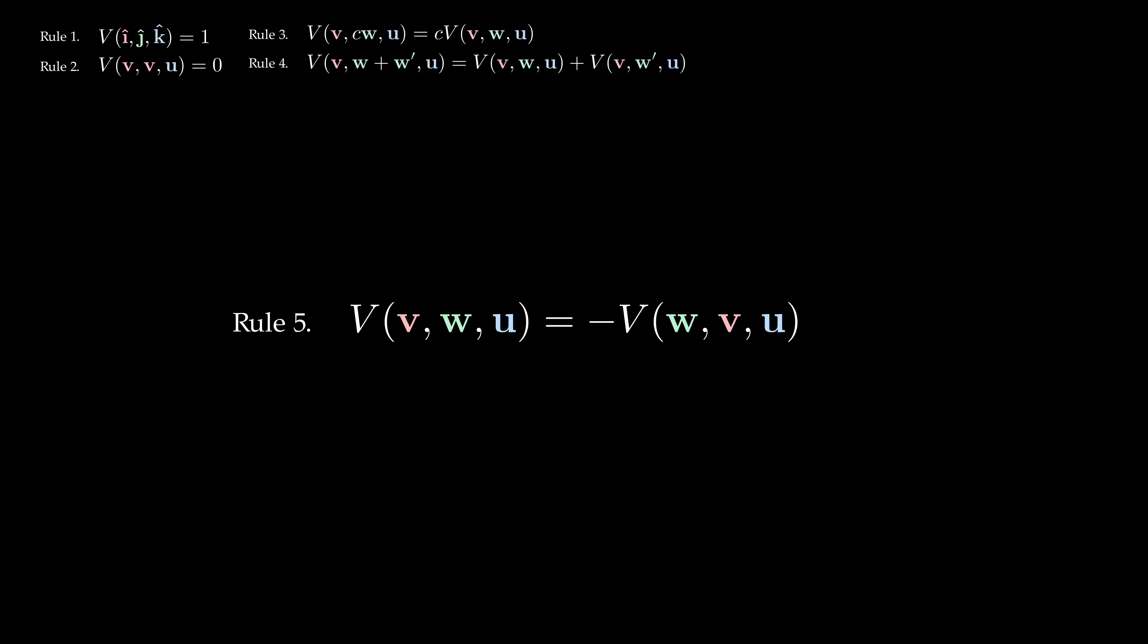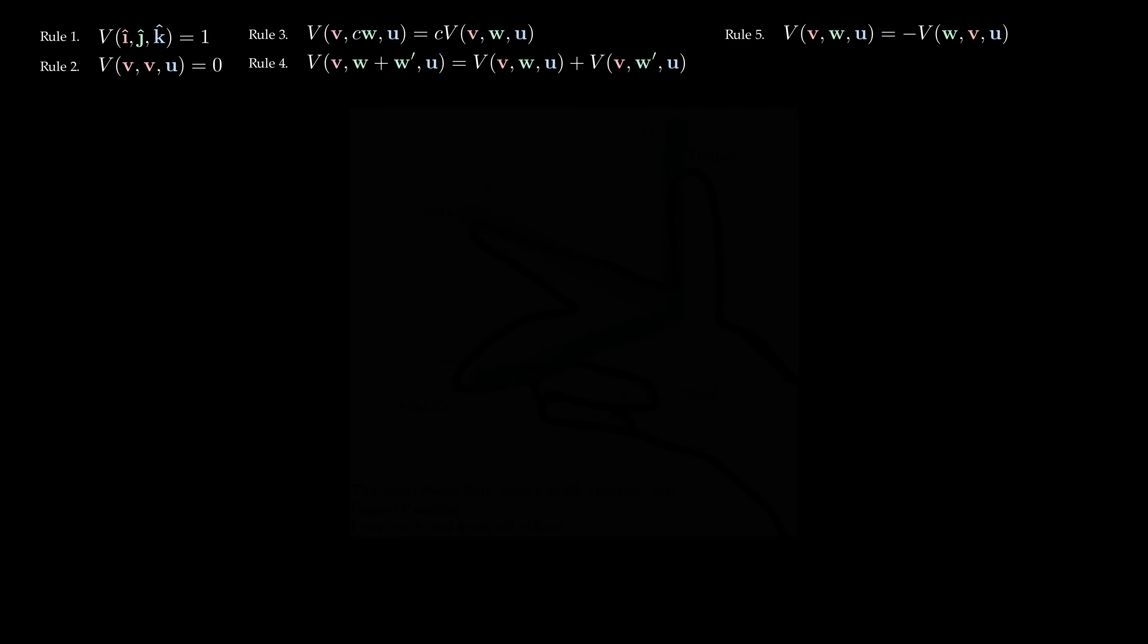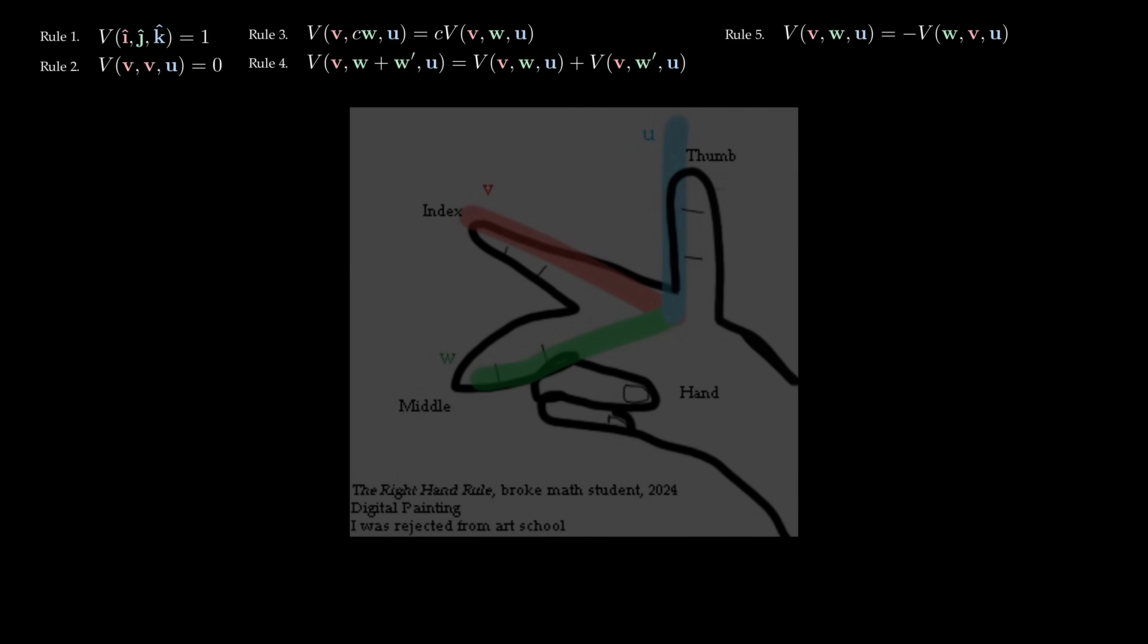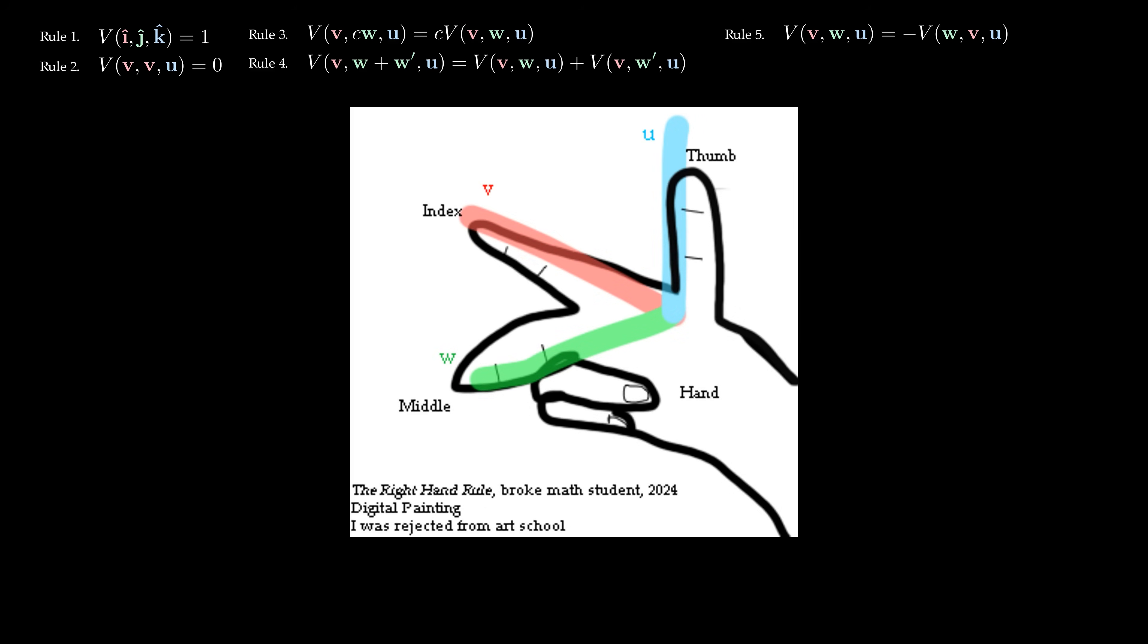We see that swapping any two slots of the volume function V introduces a minus sign. This time, the minus sign captures the orientation of 3D space. The parallelepiped, formed by vectors v, w and u in that order, has positive orientation if and only if it satisfies the right hand rule, as in this illustration.